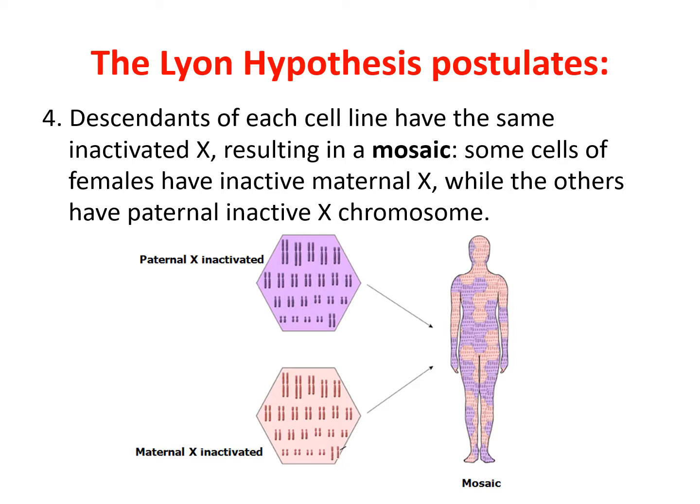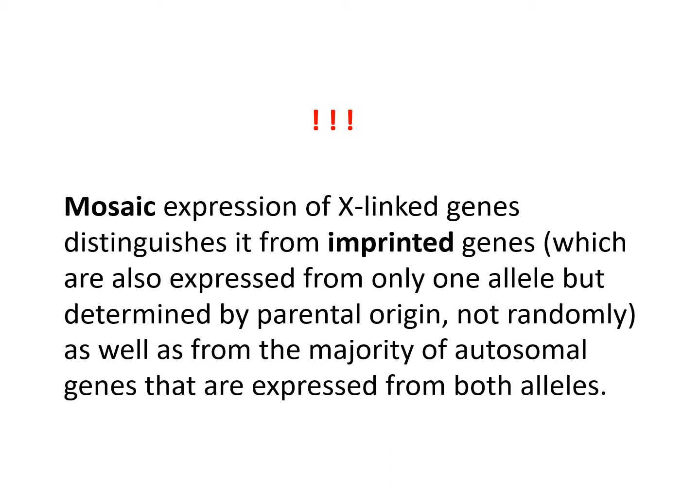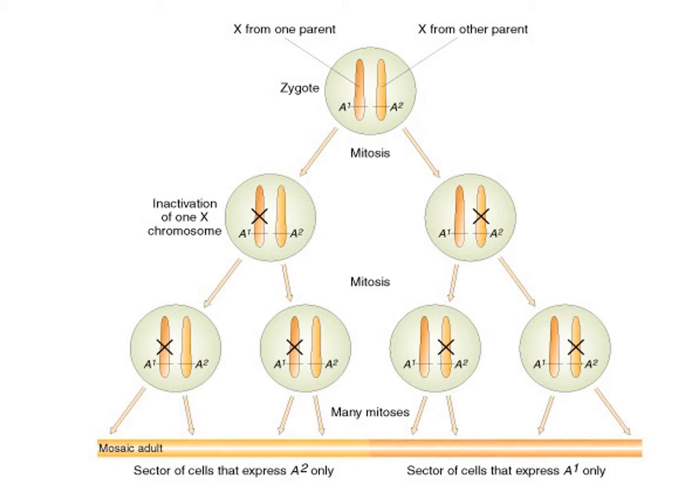X inactivation is a random process, so in any female some cells contain active maternal X and some contain active paternal X. Every female is mosaic with regard to X-linked genes. The mosaic expression of X-linked genes distinguishes it from imprinting. Imprinting also presumes expression from only one allele, but in imprinting the expression depends on parental origin — solely maternal or solely paternal — whereas X inactivation is a random process.